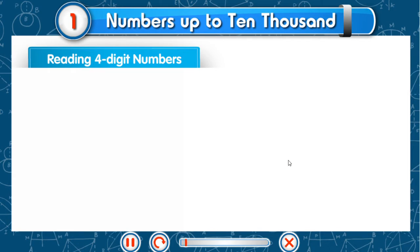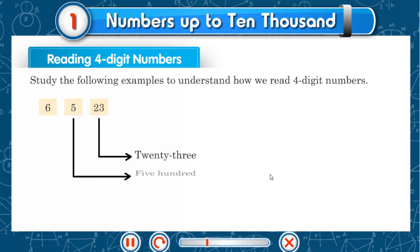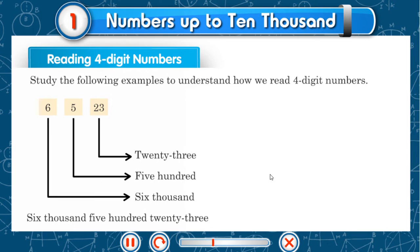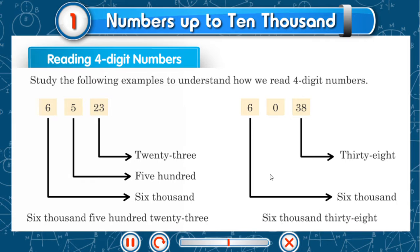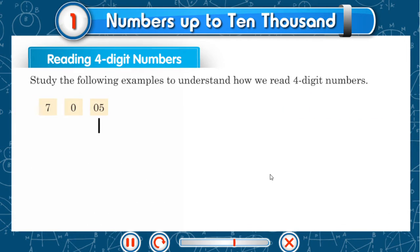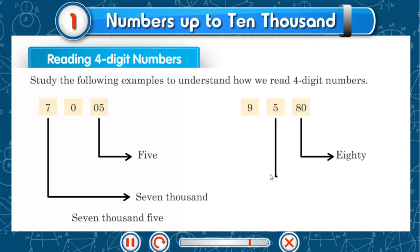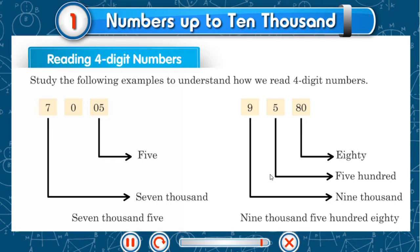Reading 4-digit numbers. Study the following examples to understand how we read 4-digit numbers. Th 2, T 3: 2,000 plus 5 hundreds plus 6 tens: 2,536. 3, 8: 3,800. 6,000. 5: 6,005. 7,000. 7,005. 80, 500, 9,000: 9,580.